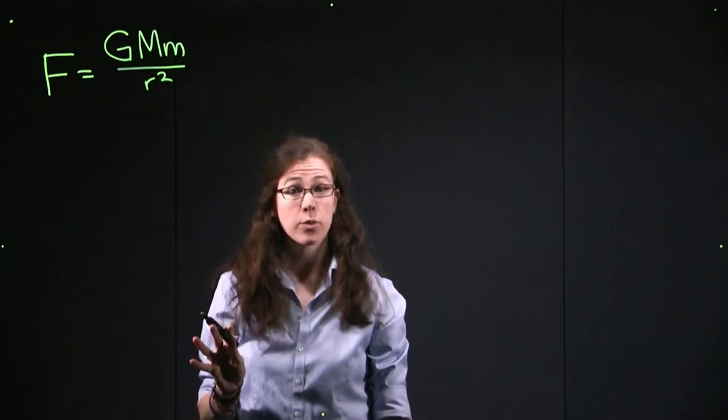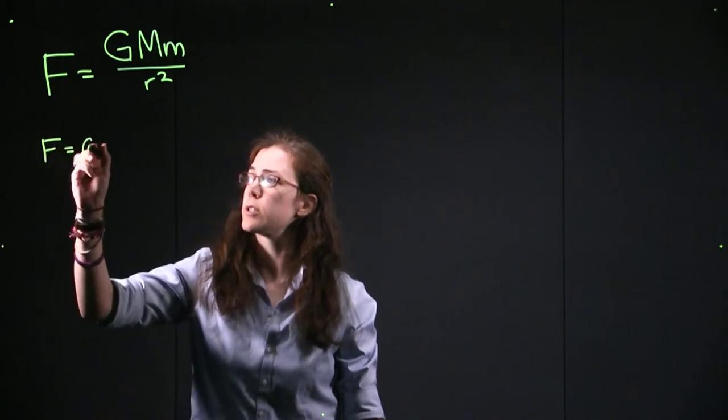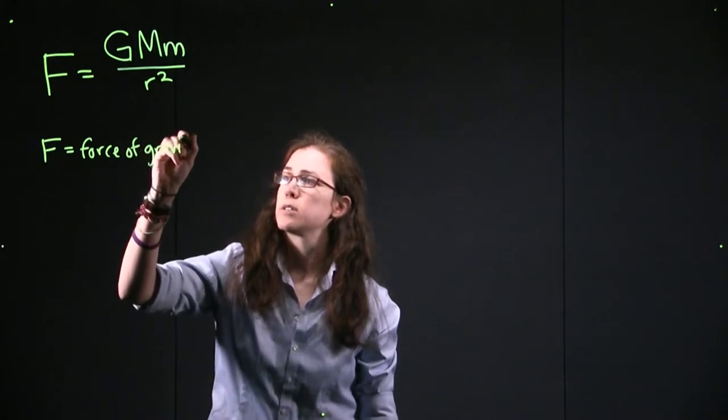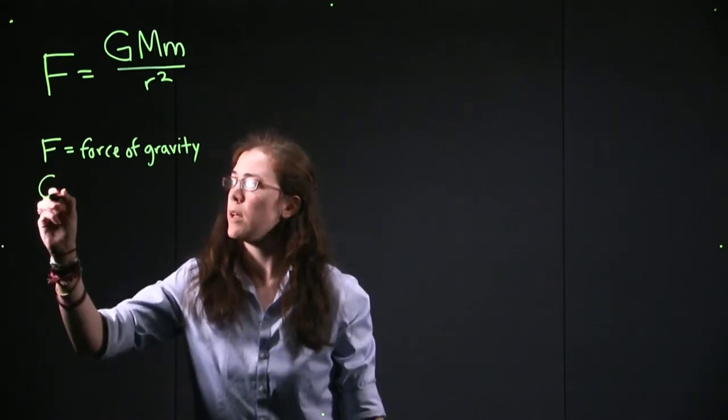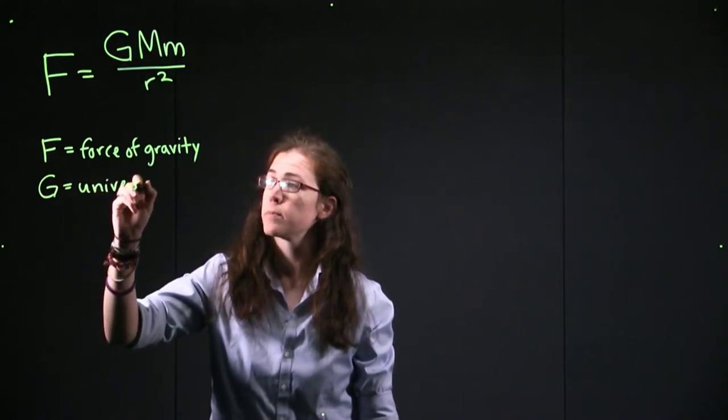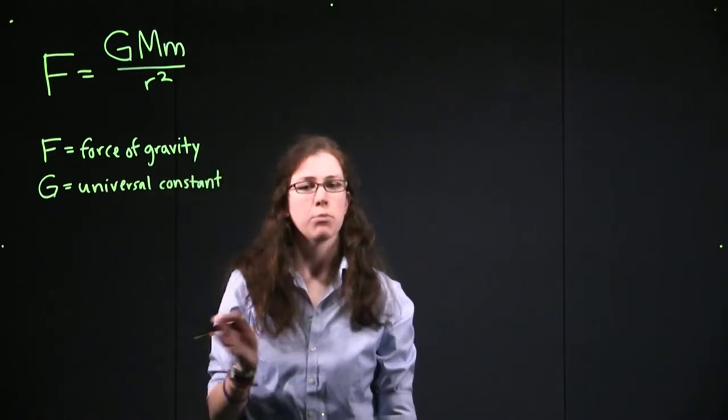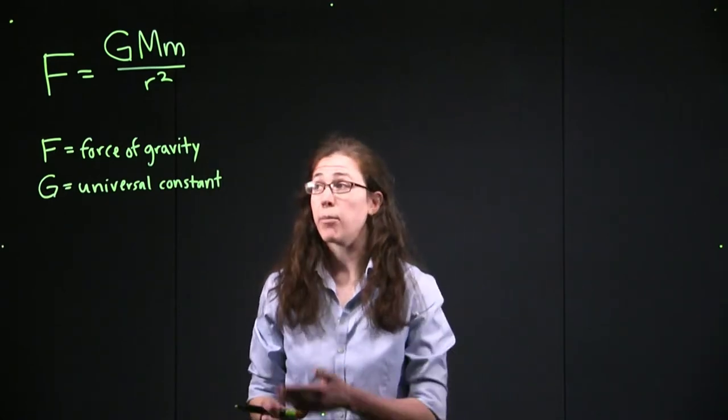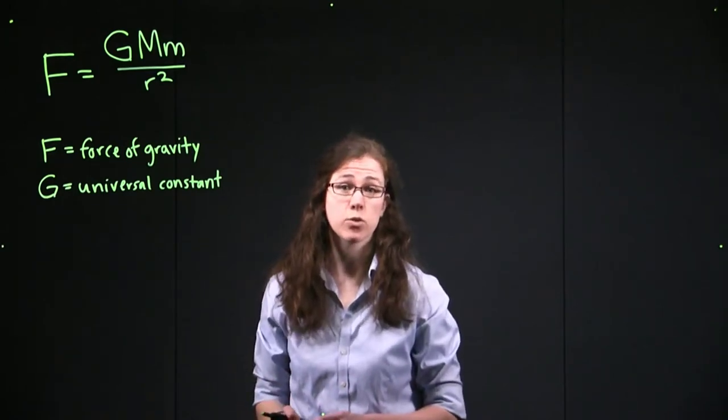And we want to make sure that we know what each of those different pieces mean. So the F here refers to the force of gravity, how much of a force is being experienced as an attractive pull force between those two masses. The capital G is the universal constant for gravity, and we won't ever have to memorize what that number is, but in the standard units that astronomers use, it's 6.67 times 10 to the minus 11. It makes that force very, very small unless we are talking about large objects like planets or moons or even stars.